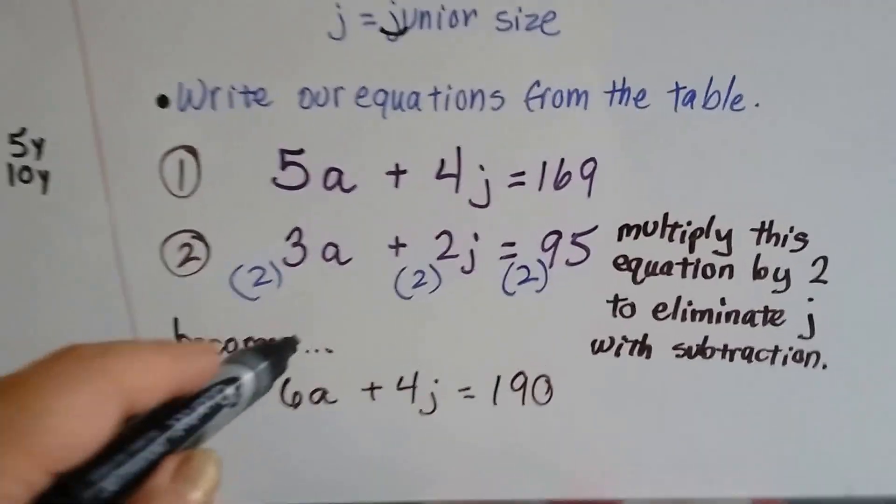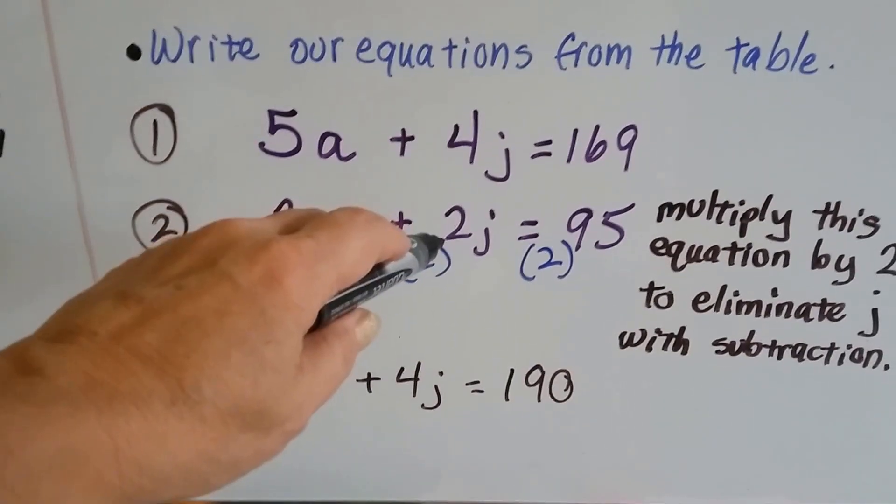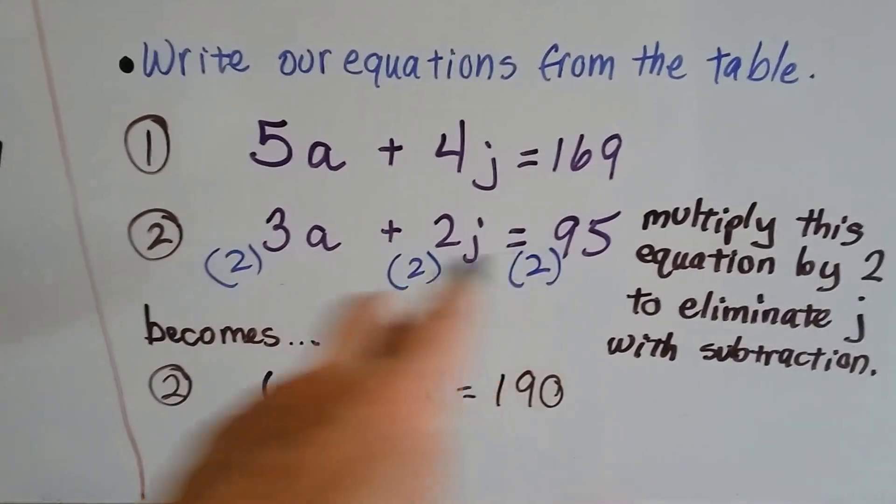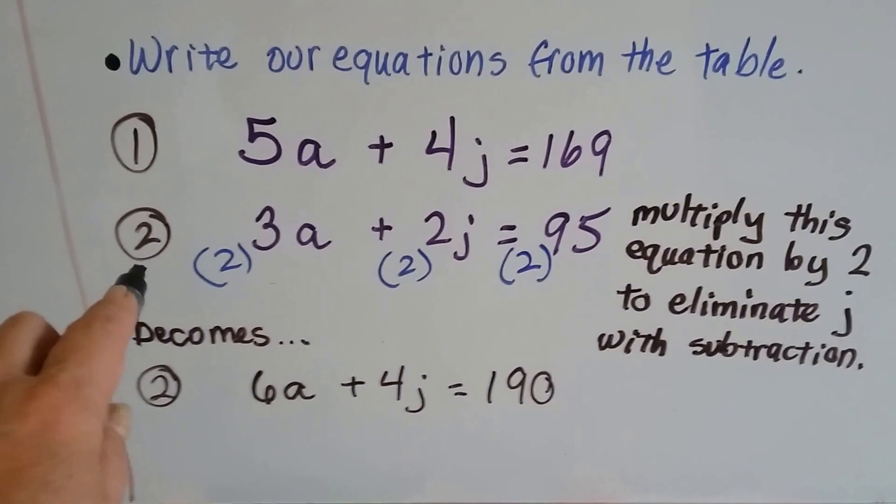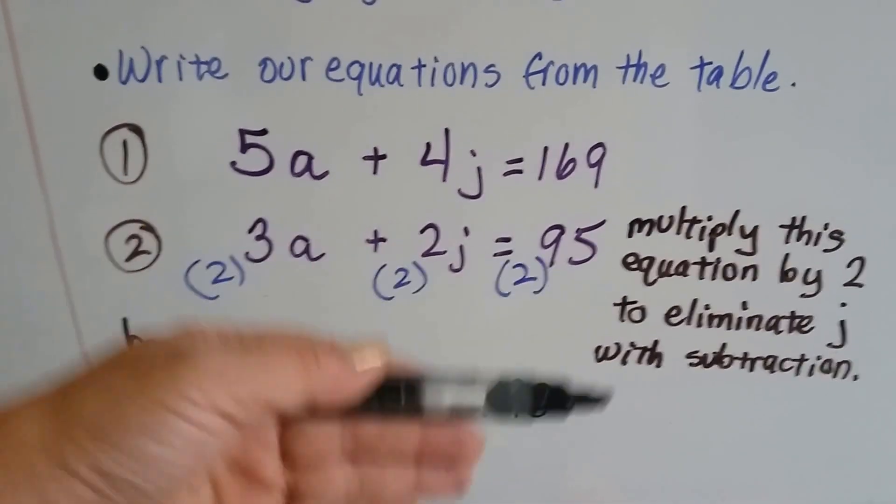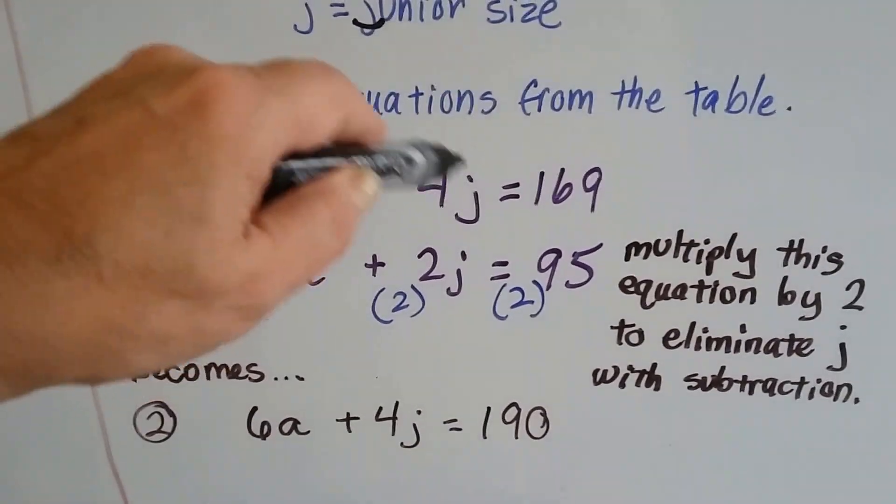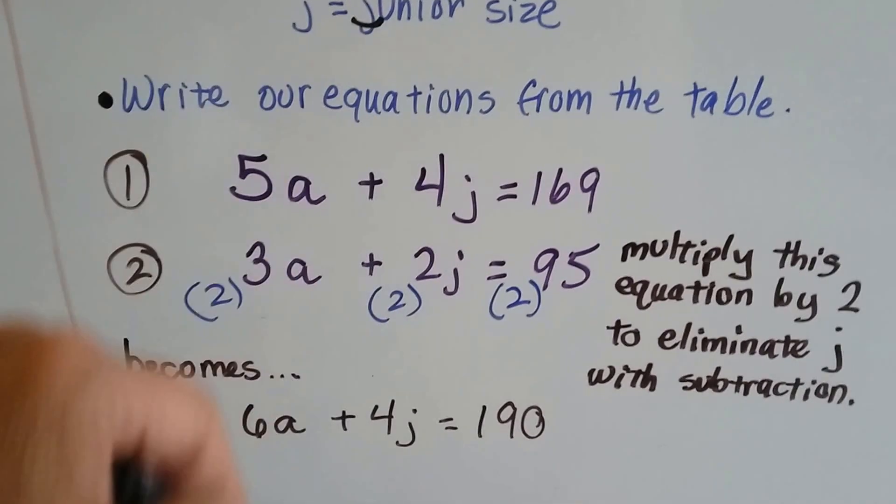So the first thing I notice is this 4J and this 2J. If we multiply this second equation by a 2 for every term, we can raise this equation up so that they both have a 4J. Then we can subtract.